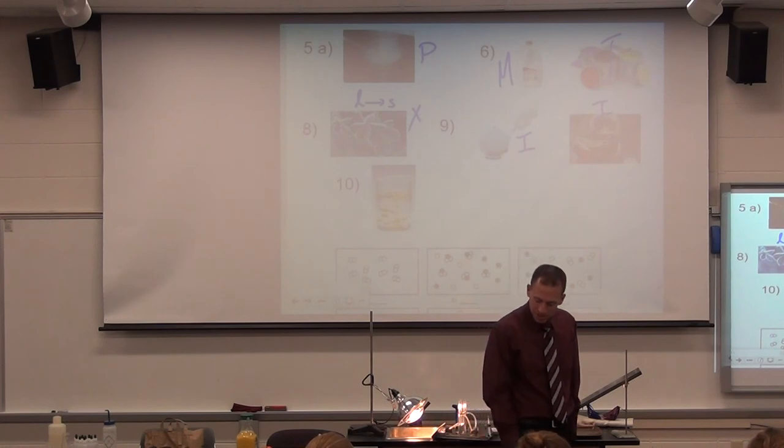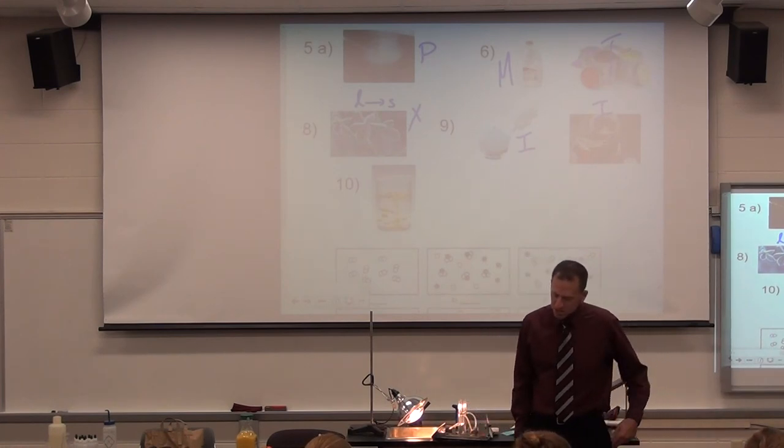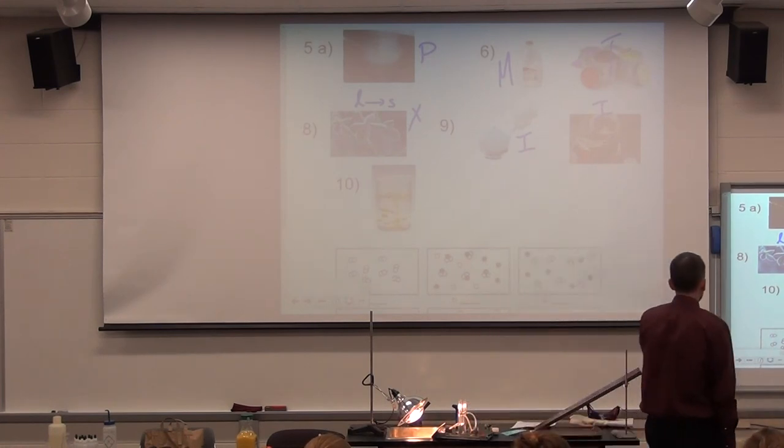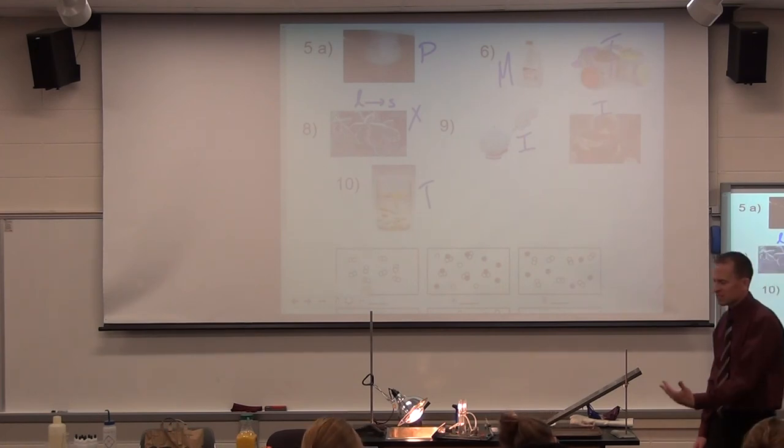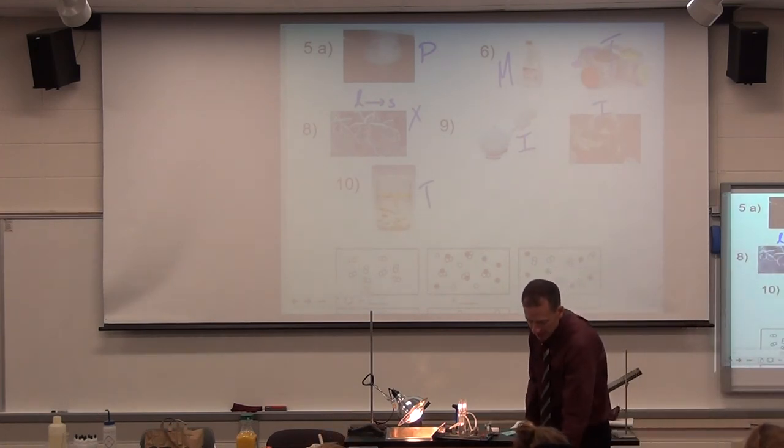Number ten. Oil and water. So, we're doing element, compound, homogenous, or heterogeneous. Well, I look at that picture. Clearly, I have more than one thing. So, that's not pure. So, now I've got to go to homo or hetero. And, clearly, that is different. Right? So, those are not the same. So, that is a heterogeneous mixture. Right? Hetero means different. Homo means the same.